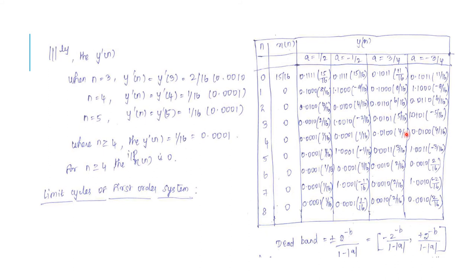We are now in a position to obtain the dead band. In a limit cycle, the amplitudes of the output are confined to a range of values, which is called the dead band of a filter. For this first order system, the dead band formula is ±2^(−b) / (1 − |a|), where b is the number of binary bits including the sign bit used to represent the product, and a is the pole value.